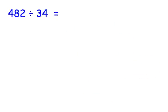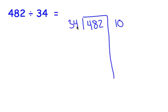Last problem is 482 divided by 34. Again, I like to start with nice easy numbers. Let's start with 10 groups of 34. 10 times 34 is 340. Subtract. 2 minus 0 is 2, 8 minus 4 is 4, 4 minus 3 is 1. Now we're left with 142.